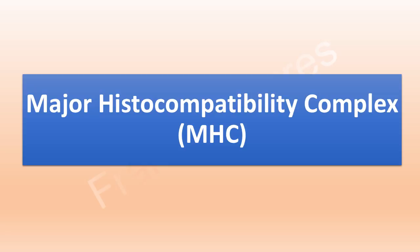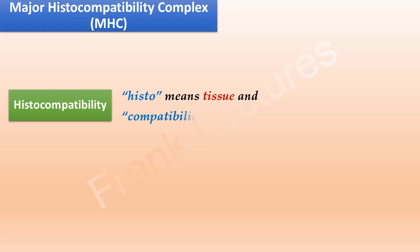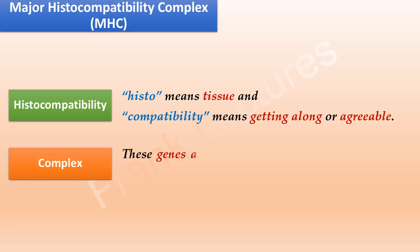Let's understand some important points about the major histocompatibility complex. The term 'histo' means tissue and 'compatibility' means getting along or agreeable. The MHC got its name from the fact that the genes in this region encode proteins that determine whether a tissue transplanted between two individuals will be accepted or rejected. The term 'complex' represents that these genes are localized to a large genetic region containing multiple loci.